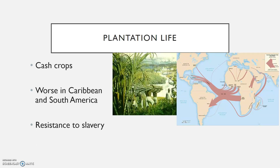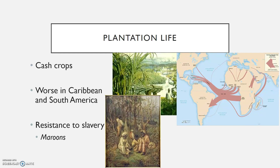Regardless of where they lived, there was always some amount of resistance to slavery. Some were mild, like slaves purposely working slow or sabotaging equipment, while others were more active, such as slaves running away and forming maroon societies. Maroons were runaway slaves who usually fled into the swamps and mountains and sometimes formed self-governing societies. The most dramatic form of resistance was slave rebellions. Slave owners generally developed effective systems for keeping slaves under control, but the fear of rebellion led them to develop some pretty brutal systems.